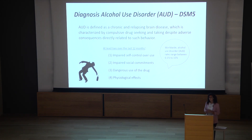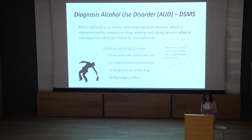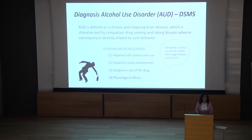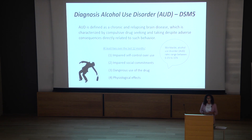To fit the diagnosis, you need to qualify for two of the following criteria for at least a year. The first is impaired self-control — the classic 'I can stop whenever I want to.' You plan for one or two beers, have work tomorrow, and end up with ten. The second is impaired social commitments — your spouse notices changed behavior, you get into fights, people say something at work. The third is dangerous use, like drinking and driving. And the last is the physiological effect — developing tolerance or withdrawal symptoms.